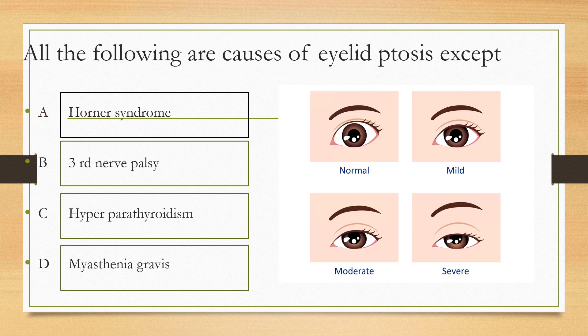All the following are causes for eyelid ptosis except: option A Horner's syndrome, option B third nerve palsy, option C hyperparathyroidism, option D myasthenia gravis. All can cause eyelid ptosis except option C, hyperparathyroidism.